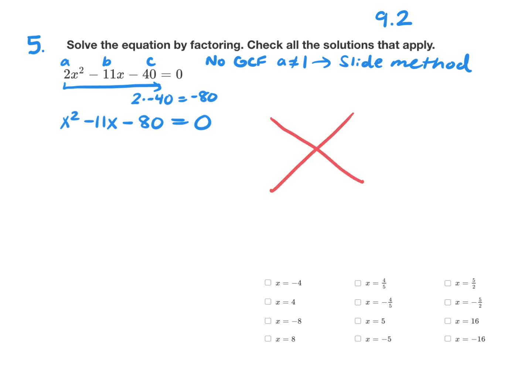Now we want to find two numbers that multiply to negative 80 and add to negative 11. If you see it, great, go to your answer. If you don't, list out your factor pairs. Factors of 80 are 1 times 80, 2 times 40. 3 doesn't go into 80, but 4 does, 20 times. 5 goes into 80 16 times.